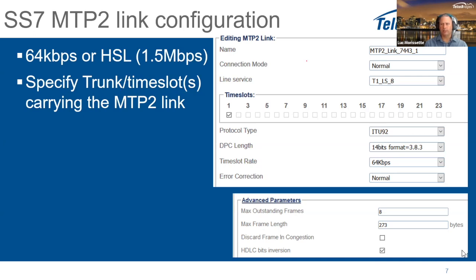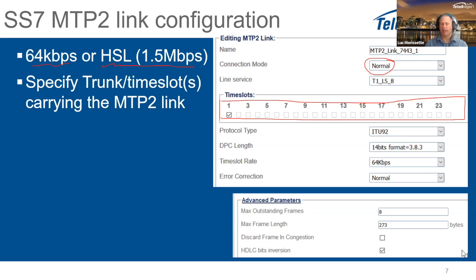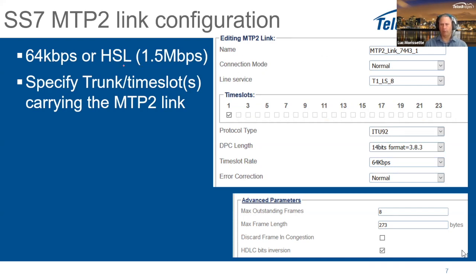The default mode is normal, or 64 kbps, but you can change this to high speed links. The device supports high speed links, where you take the whole T1 to carry your MTP2 links — this becomes one MTP2 link at 1.5 Mbps instead of 64 kbps, allowing much more traffic. This is usually used when you have STP functionality with heavy traffic. For E1 with HSL, you get a 2 Mbps link.